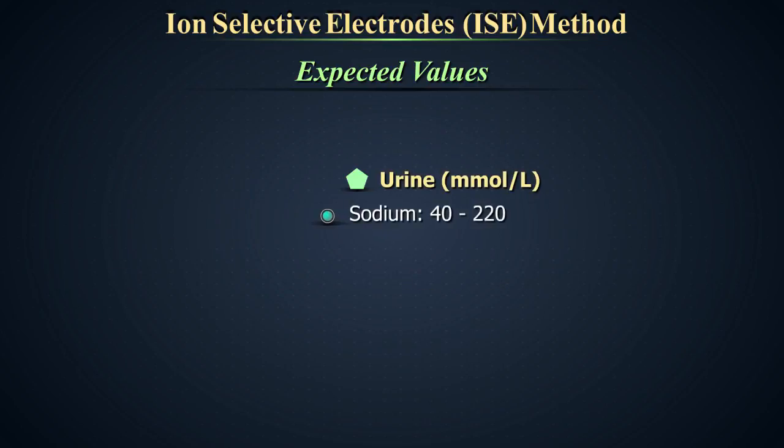Urine. Sodium, 40 to 220 millimoles per liter. Potassium, 25 to 125 millimoles per liter. Chloride, 110 to 250 millimoles per liter.